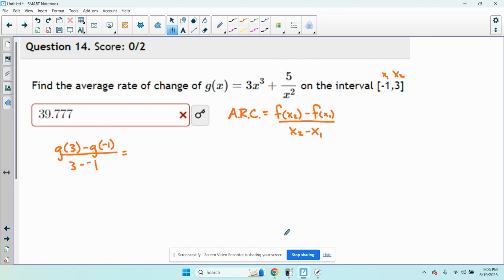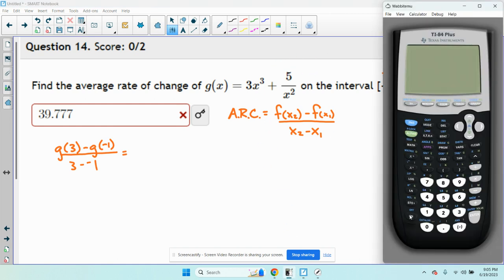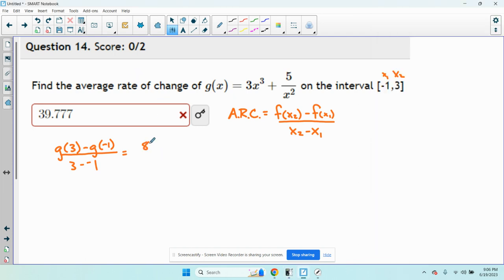g of 3. So we're going to have to do, what is g of 3? So we'll say 3 times 3 to the third, plus 5 divided by 3 squared. 81.5 repeating, so this is 81.56, we'll just say that.